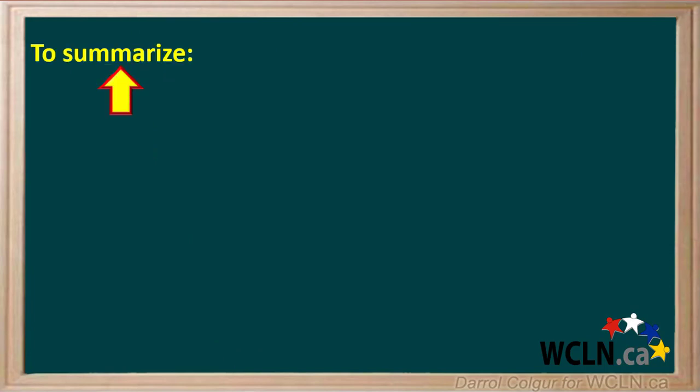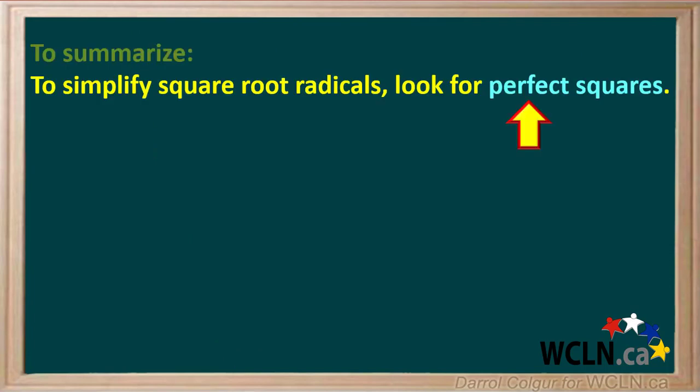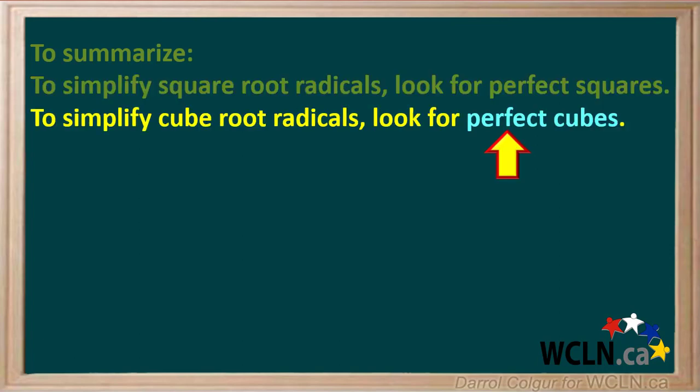To summarize: to simplify square root radicals, look for perfect squares and work from there. And to simplify cube root radicals, look for perfect cubes and work from there.